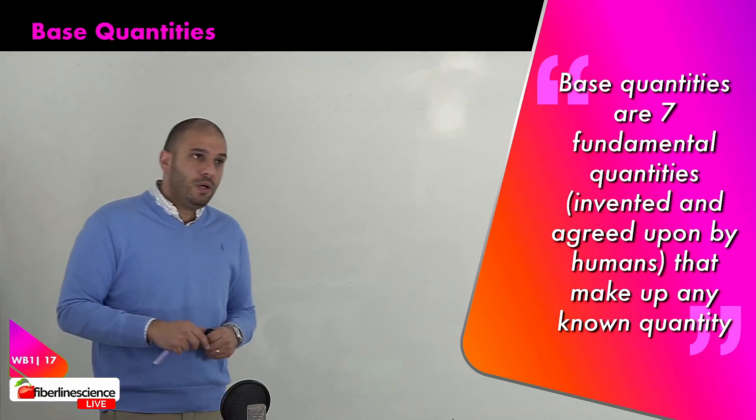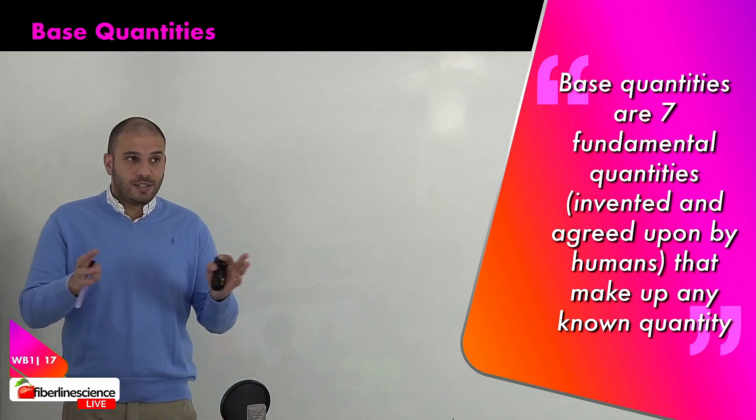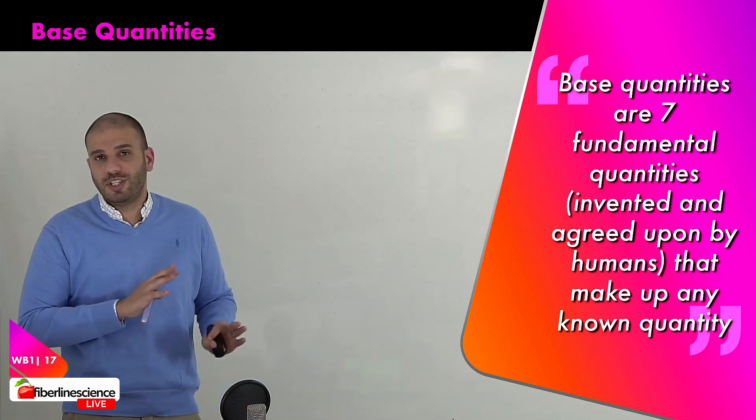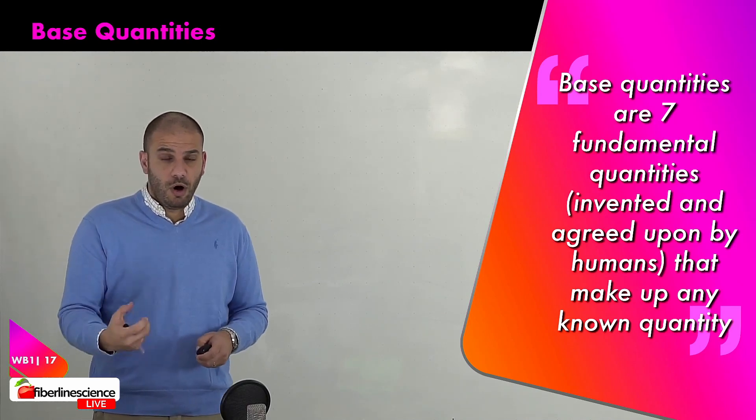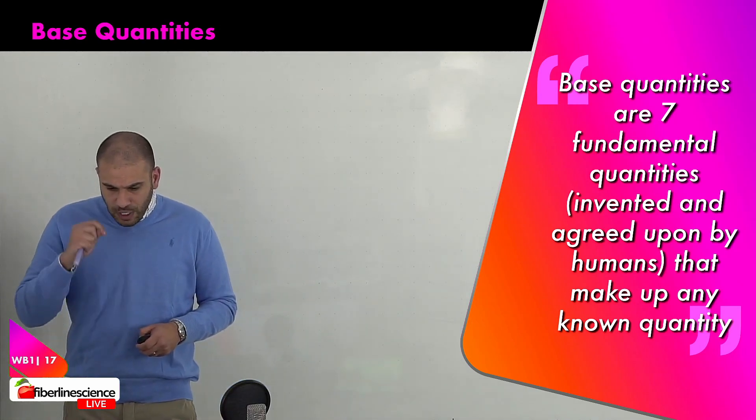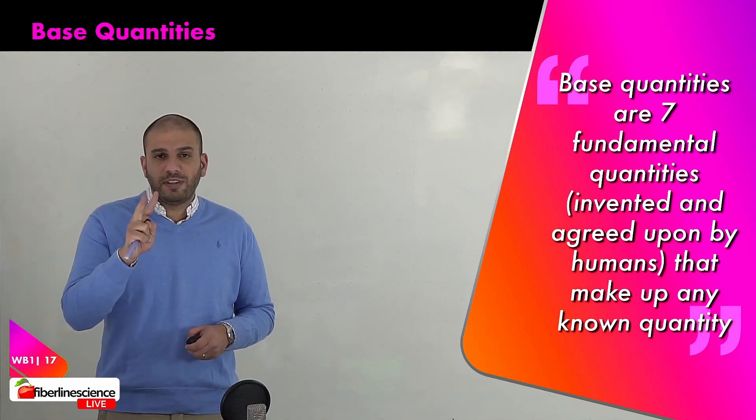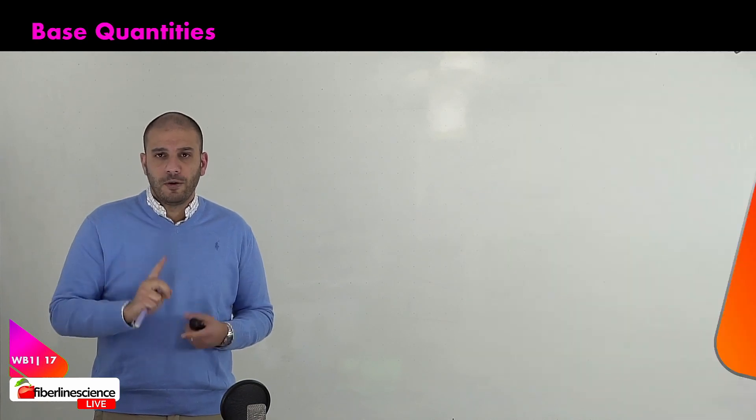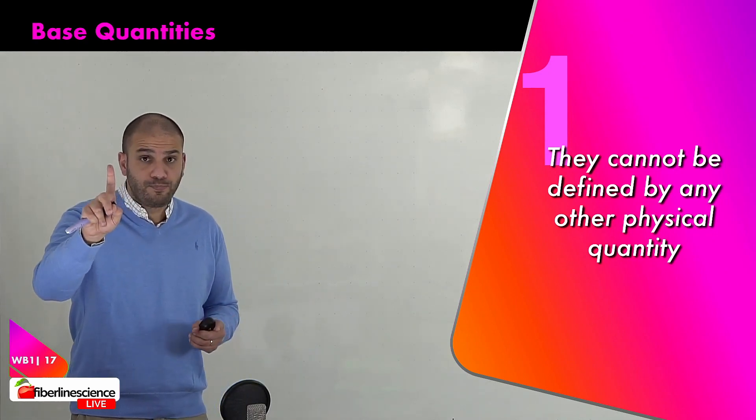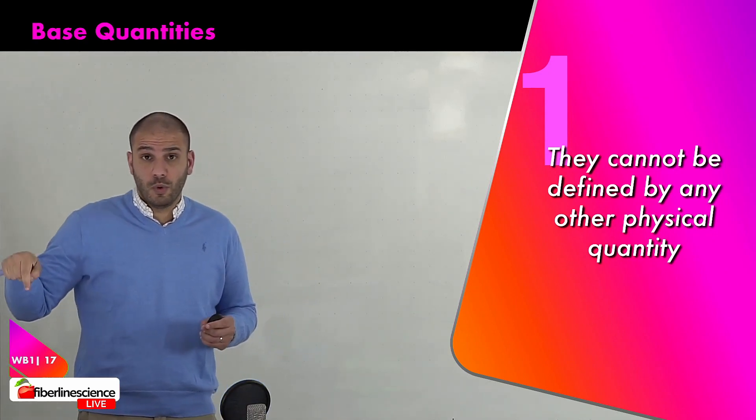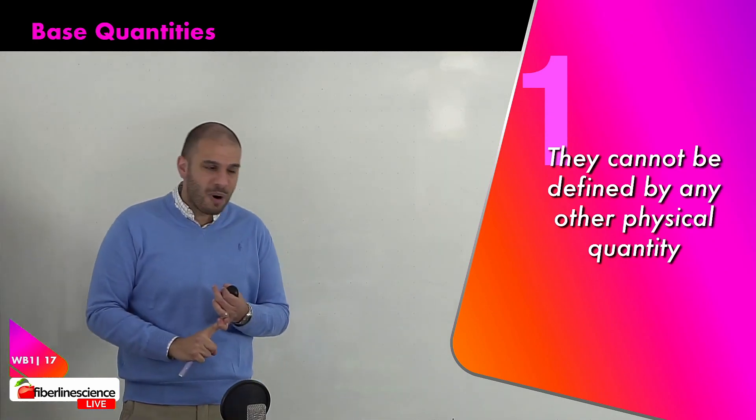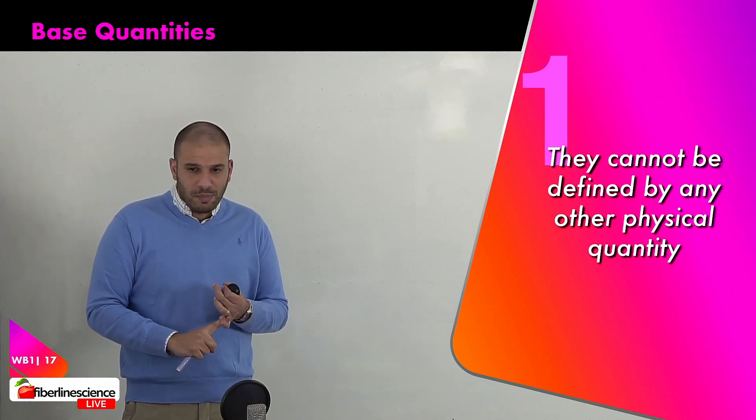Base quantities - if you've got 60 Lego blocks, this is just seven, but these seven you need to know by heart. Seven fundamental quantities, and they've got two very particular properties. First property: they cannot be defined by any other physical quantity. I remind you, list these down on the workbook. Fill the workbook, fill your notes as we go along. So they cannot be defined by any other physical quantity.